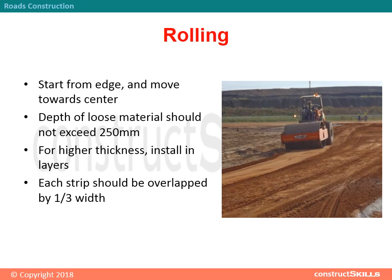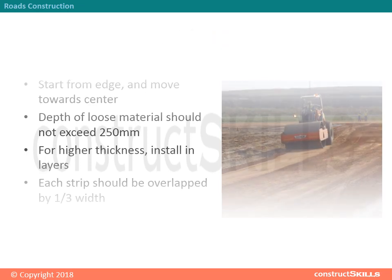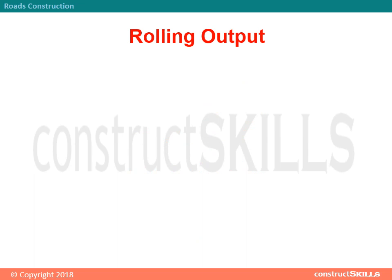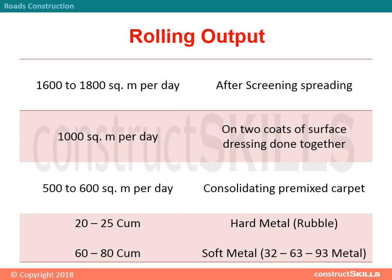Each strip should be overlapped by one-third of the width. Rolling Output: In the case of after-screening spreading, rolling output is 1,600 to 1,800 square meters per day.